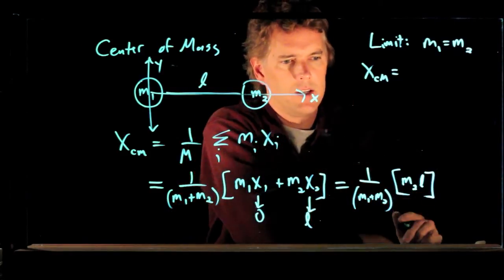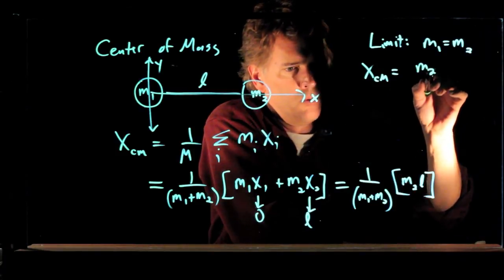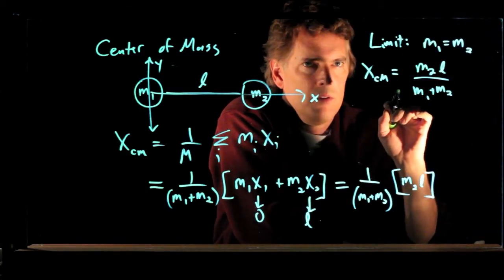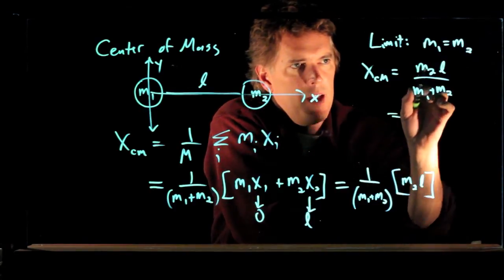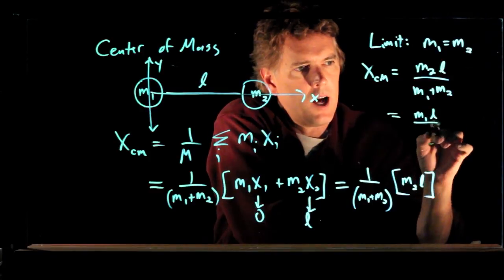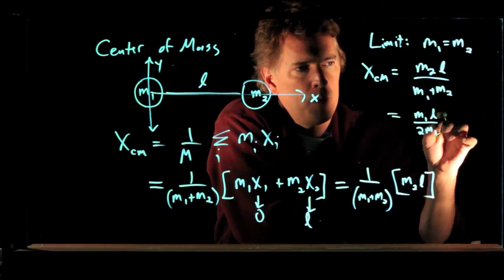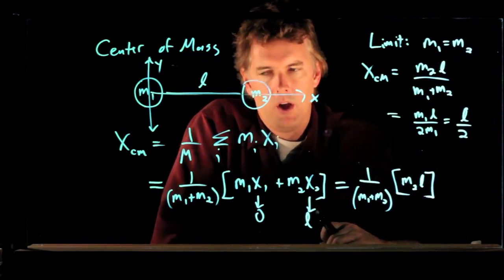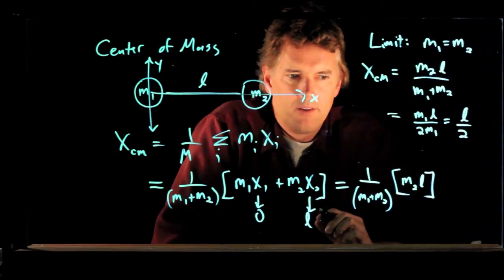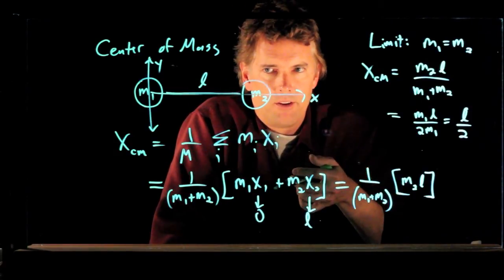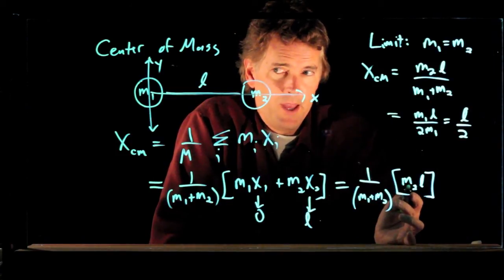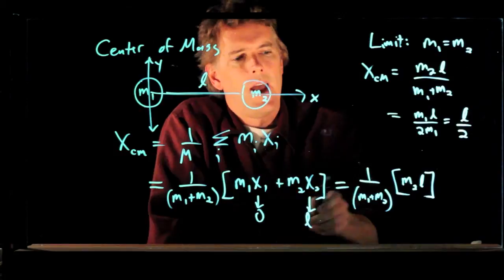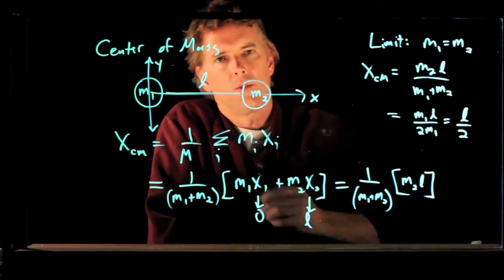So let's see if our calculation tells us that. It says m2 L divided by m1 plus m2. But if m1 is now equal to m2, then we can replace m2 with m1. And so this becomes m1 L over 2 m1. The m1's cancel out, and we were right, it's L over 2. So in the case where the masses are equal, we do in fact get the center of mass right at the center. If they're not equal, then it shifts to the right or to the left. And if m2 gets heavy, m2 is big compared to m1, then x center of mass goes up, which means it moves over towards m2. And if m2 is small, then it shifts back towards m1.